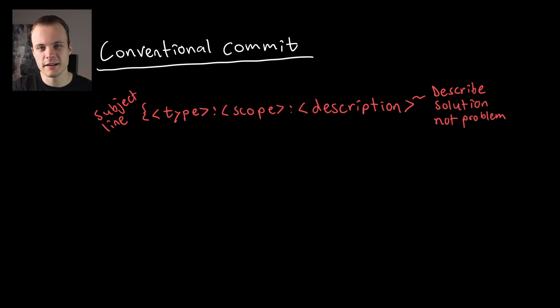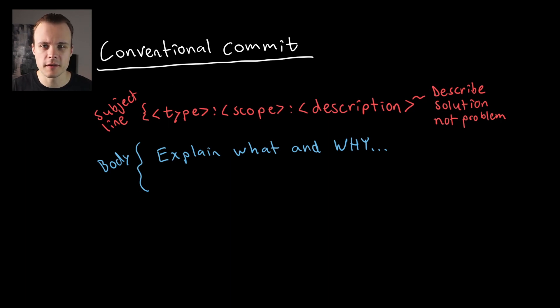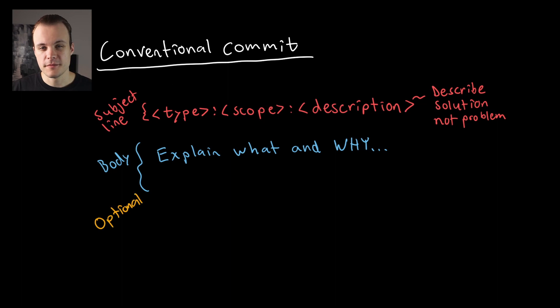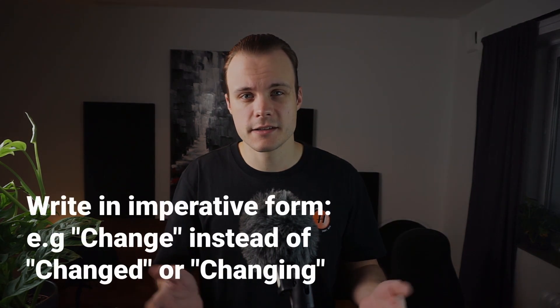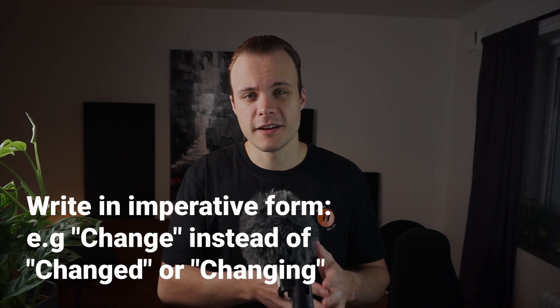After the subject line comes a blank line followed by the body, where you write a more detailed description of your commit. You should think of the body as a way to motivate to a potential viewer — even if it's yourself — why this change is actually needed. While you should briefly describe what the commit does, you should mostly focus on why this change is needed. After the body comes a blank line followed by an optional footer, mainly for including any relevant metadata — for example, if you're using an issue tracker like Jira, you may include the issue number. For this project, I'm actually just going to include the video name in the footer so it's easy to see what video the commit relates to. Finally, you should write in the imperative form — so write 'change' and not 'changed' or 'changing.' You should think of your commits as something that is to be applied. It's actually shorter to write in the imperative form, and it's a good idea to stick to one way of writing.